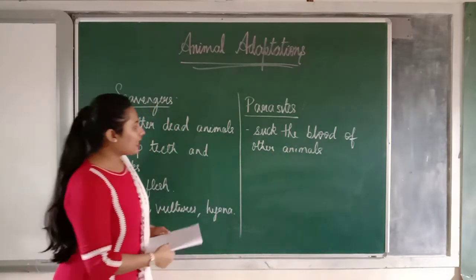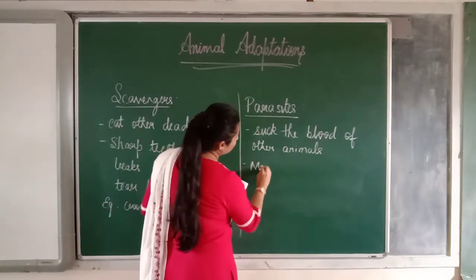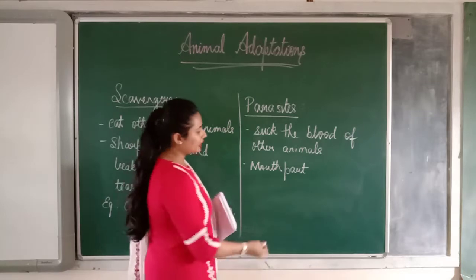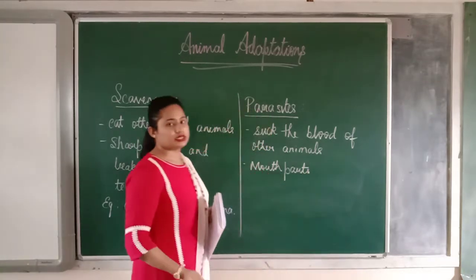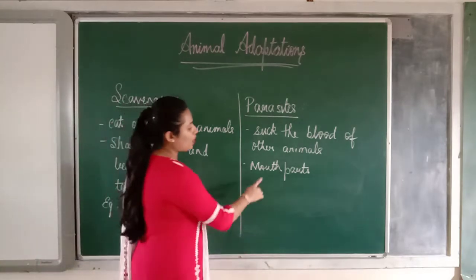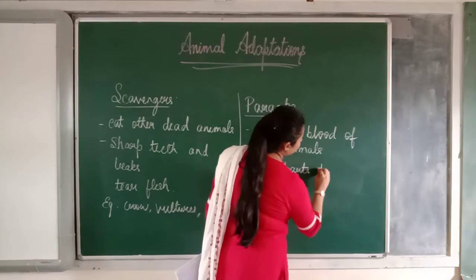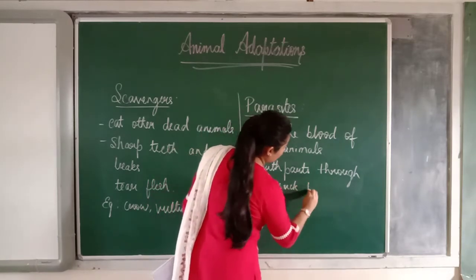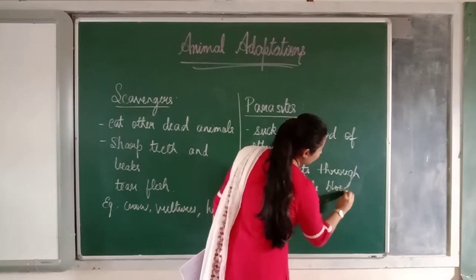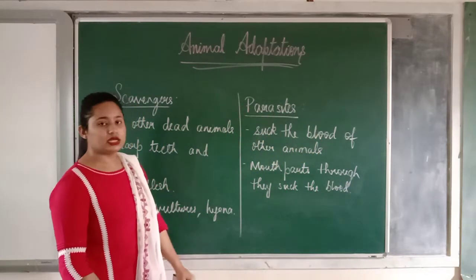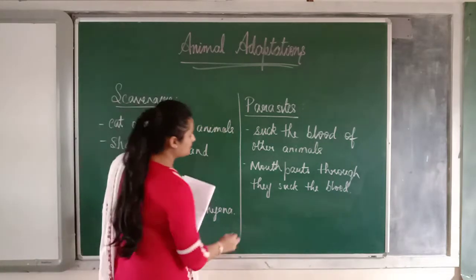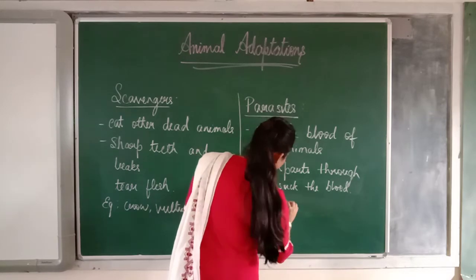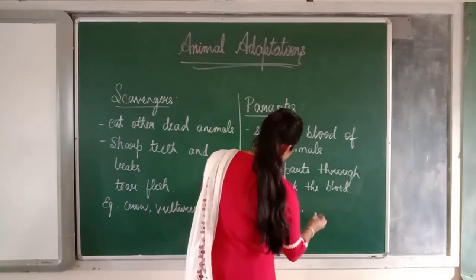These animals have got different mouth parts through which they suck the blood. Some of the examples are lice, flea and tapeworm.